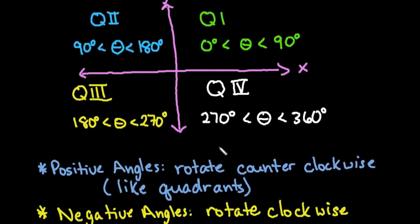Positive angles always rotate counterclockwise, just like the quadrants do. Negative angles rotate clockwise, which means they go the opposite direction. This would be negative 0 to 90, negative 90 to 180, negative 180 to negative 270, and negative 270 to negative 360 degrees. Negative angles start at the same initial side but rotate clockwise in the same pattern, just opposite.